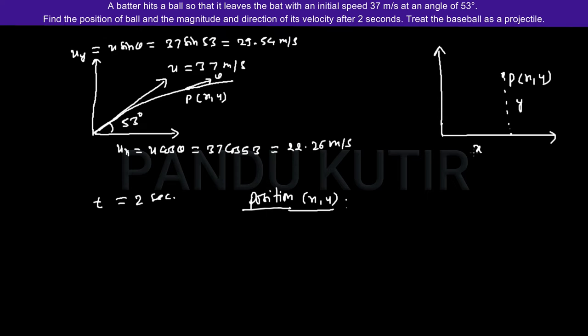To find x I need to take the horizontal component ux. Since gravity is acting vertically so there is no effect of any force along the horizontal direction. So we can use the simple formula velocity equals distance by time. Our horizontal velocity is ux so x equals ux times t equals 22.26 times 2 equals 44.53 meters.